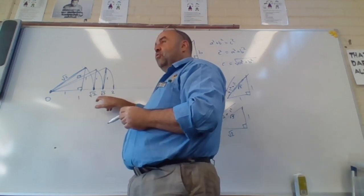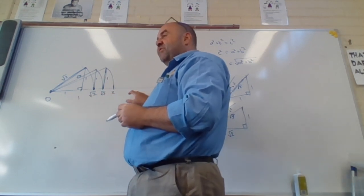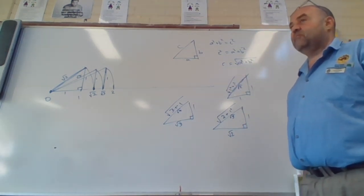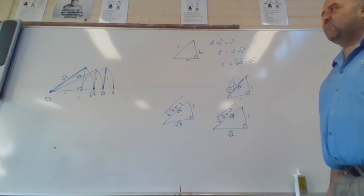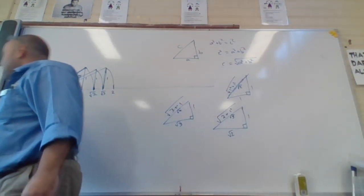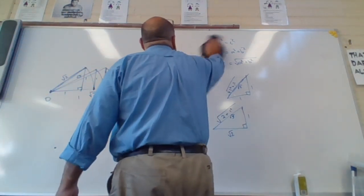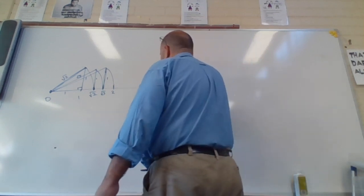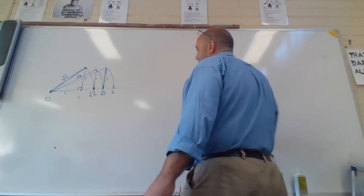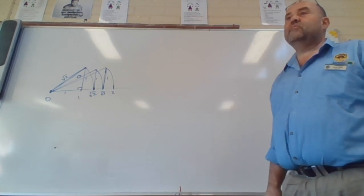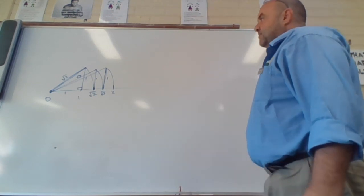And so I can keep on going. So I've got root one, root two, root three, root four, root five, root six, root seven. So I can construct all of the square roots on the number line if I wanted to. It gets messy because they get closer and closer together, but we can do that if we wanted to.